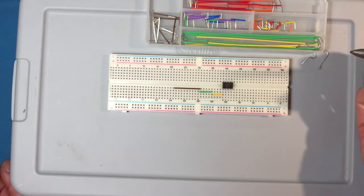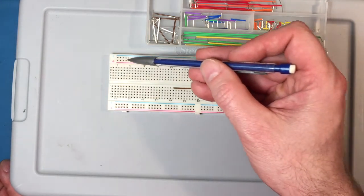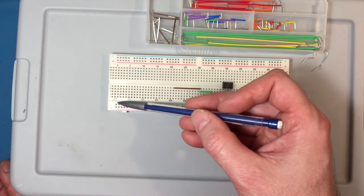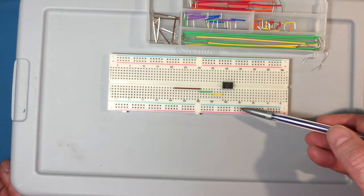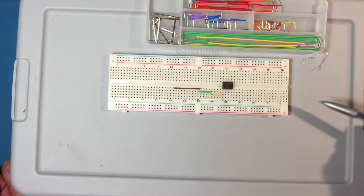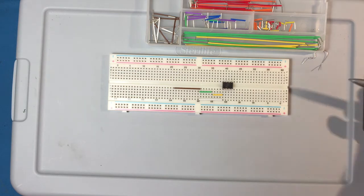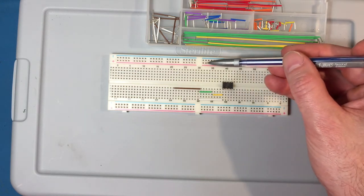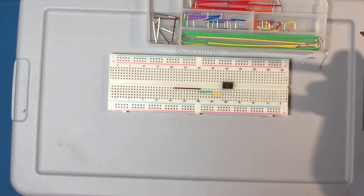So there are three other buses on the breadboard, so there's the red bus, which is on the inside here, there's another blue bus over here, and then a red bus on the outside there. And you could use those for whatever you want.